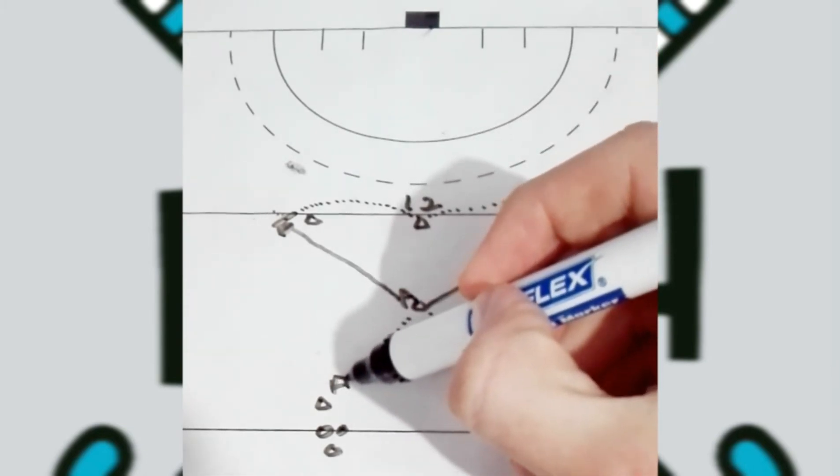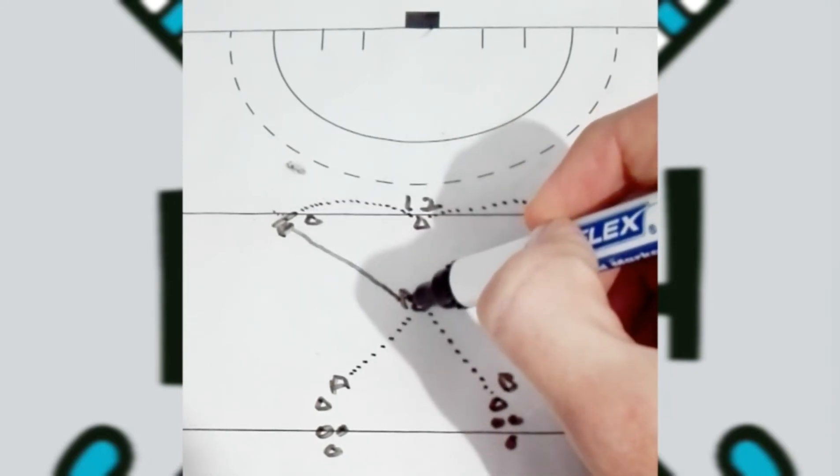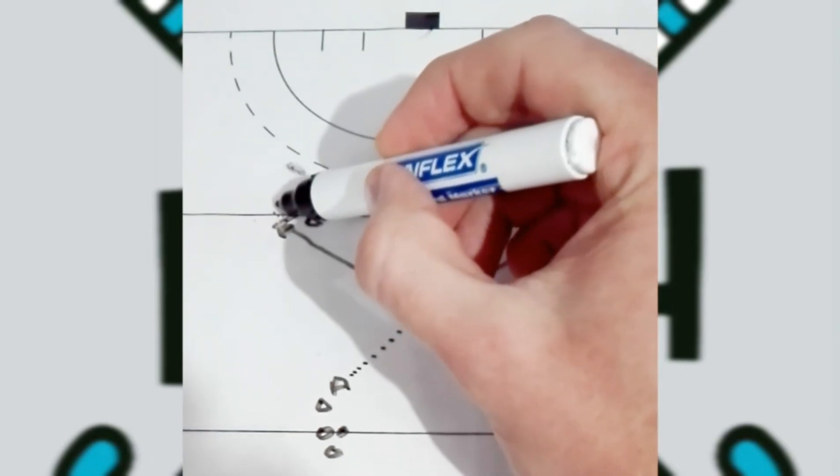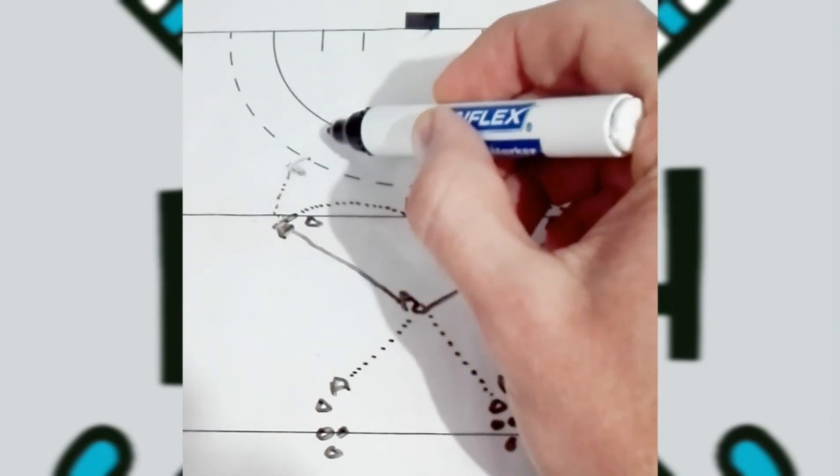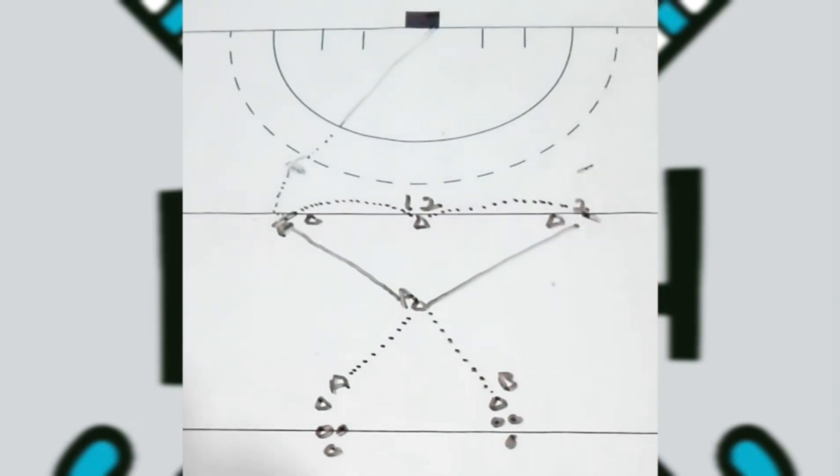So what's gonna happen is player A will dribble the ball to the middle. Player one will make a lead out wide. Player A will pass the ball to player one. Player one will open receive once again, dribble, pop the ball over this object, dribble towards the circle and take a reverse stick shot.